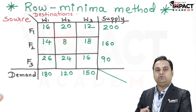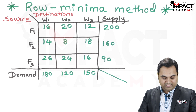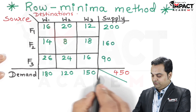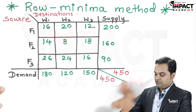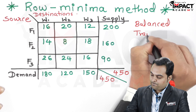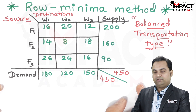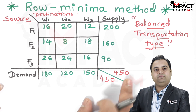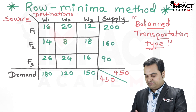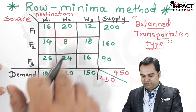Our aim is to minimize the total transportation cost. First, add up the total supply and total demand to check if they are balanced. The total supply is 450 and the total demand is also 450, so they are equal — this is a balanced transportation problem. If they were not equal, we would need to add a dummy row or dummy column. Since the method is Row Minima, we start from the first row.